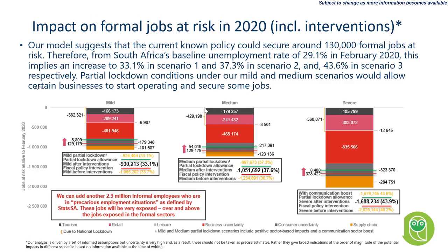The impact on jobs is also pretty scary — around a million to 2 million jobs in the formal sector being at risk, and then another 2.9 million informal employees that will be in a precarious employment situation as defined by Stats SA. Our model can only look at formal sector impacts, so it's important to remember there are 2.9 million people in precarious employment situations which could potentially be added on top. Anywhere between a million and 2 million formal sector jobs, with an additional 2.3 million informal and contract type jobs also being on the line. That would mean unemployment in South Africa could go towards 40 to 45%.